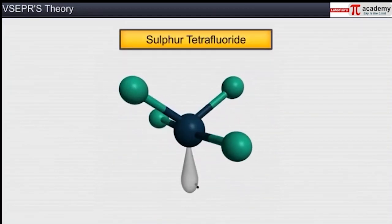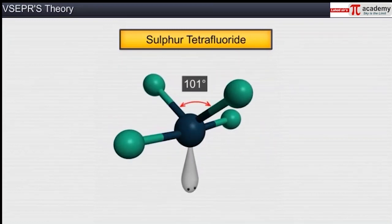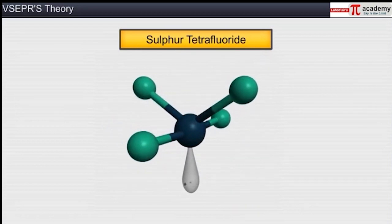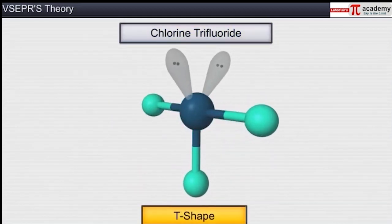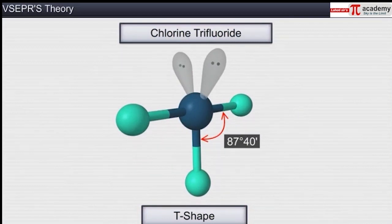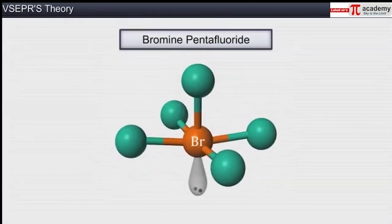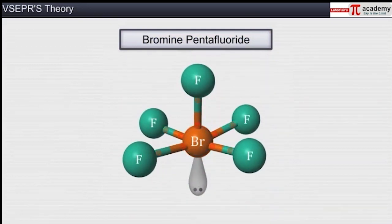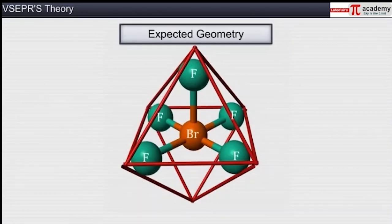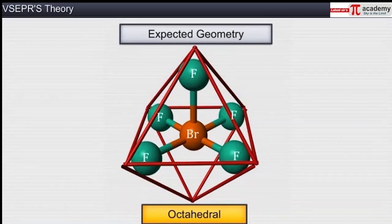A sulfur tetrafluoride molecule is seesaw-shaped, with bond angles of 101 and 173 degrees, due to the lone pair of electrons present on its central atom. The chlorine trifluoride molecule is T-shaped, with a bond angle of 87 degrees 40 minutes, and the molecular shape is distorted due to the two lone pairs of electrons on the central chlorine atom. In a molecule of bromine pentafluoride, the central bromine atom has five bonded pairs and one lone pair, giving it a distorted octahedral or square pyramidal geometry.